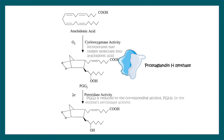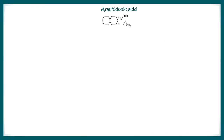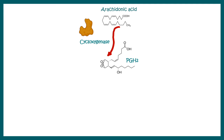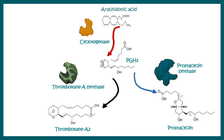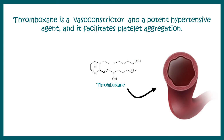Let's understand these physiological phenomena from a molecular perspective. Arachidonic acid is a precursor of prostaglandin, and prostaglandin H-synthase is the rate-limiting enzyme in this process. Omega-6 fatty acid augments prostaglandin H-synthase activity, whereas omega-3 fatty acid inhibits it — which is why omega-3s are anti-inflammatory and omega-6s are pro-inflammatory. Arachidonic acid is further converted to prostaglandin H2 via cyclooxygenase, from which prostacyclins or thromboxanes are generated depending on the enzyme present. Thromboxanes are vasoconstrictors — they constrict blood vessels — and are therefore hypertensive agents, explaining the increased blood pressure risk in omega-6-rich diets.